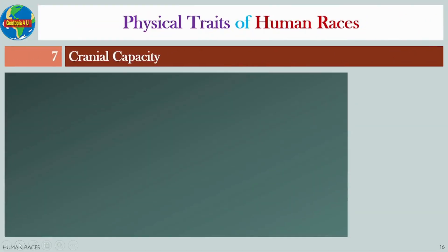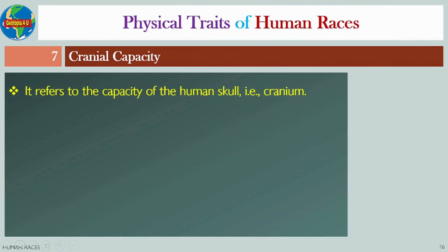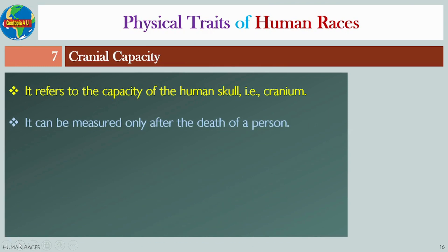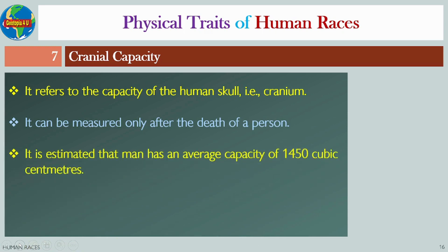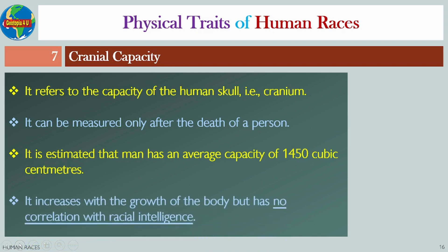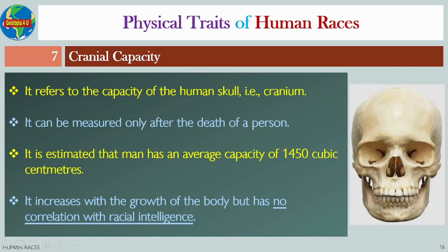Number seven: Cranial capacity. It refers to the capacity of the human skull, that is the cranium. It can be measured only after the death of a person. It is estimated that man has an average cranial capacity of 1,450 cubic centimeters. It increases with the growth of the body but has no correlation with racial intelligence.